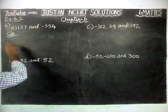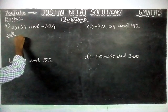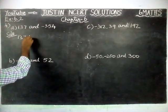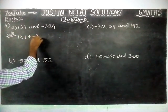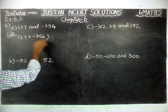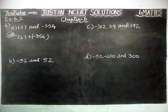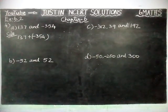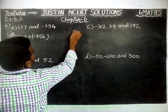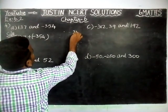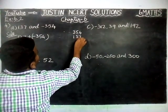Here they said the sum of 2 integers. So we are going to add these 2: 137 plus minus 354. One number is positive, one number is negative. Now we are going to find the difference between these 2 numbers: 354 minus 137.